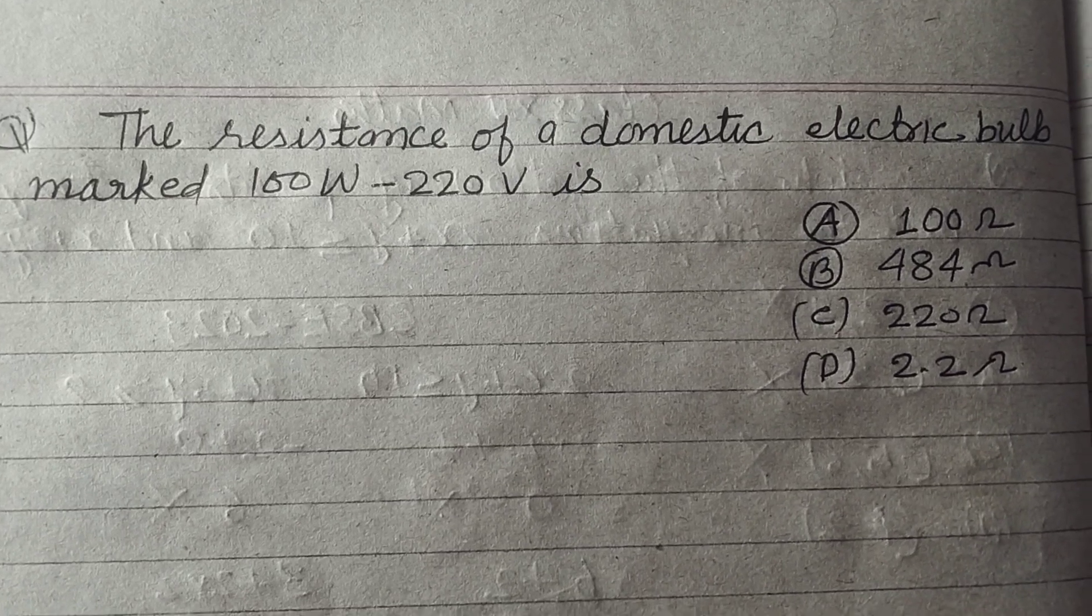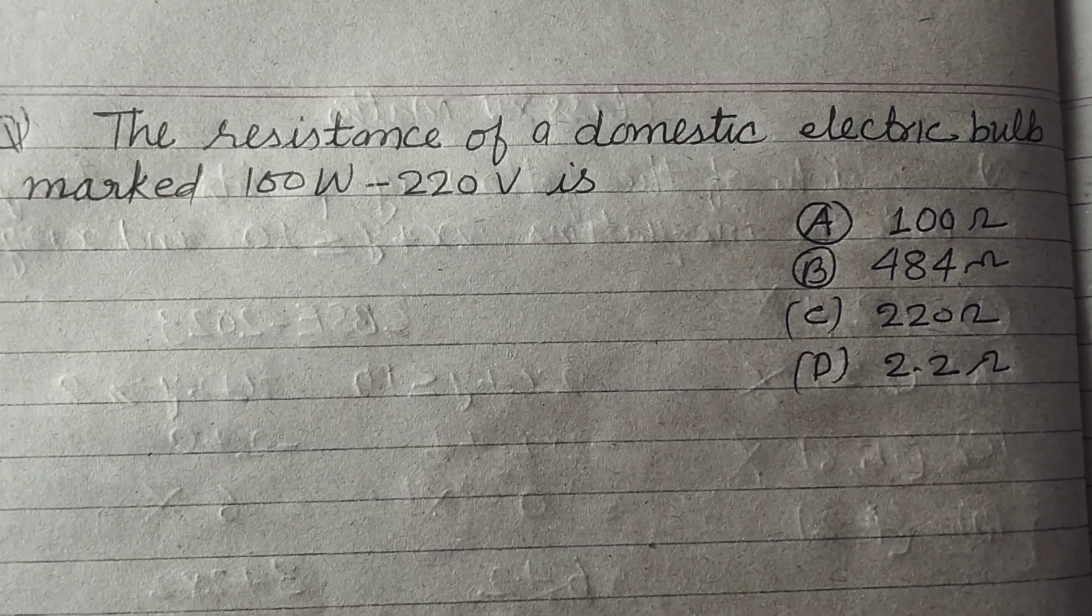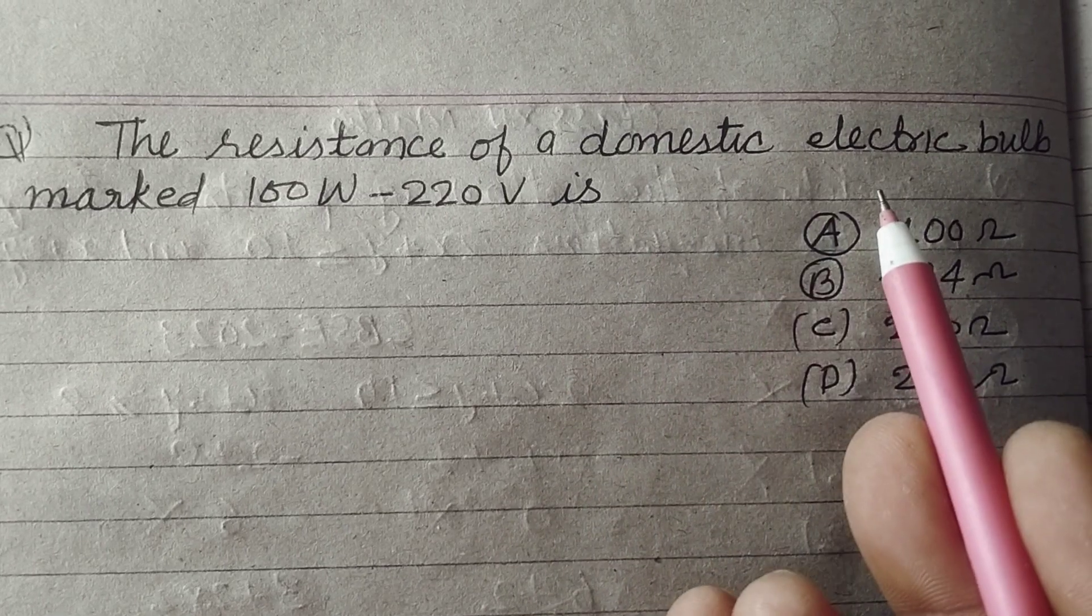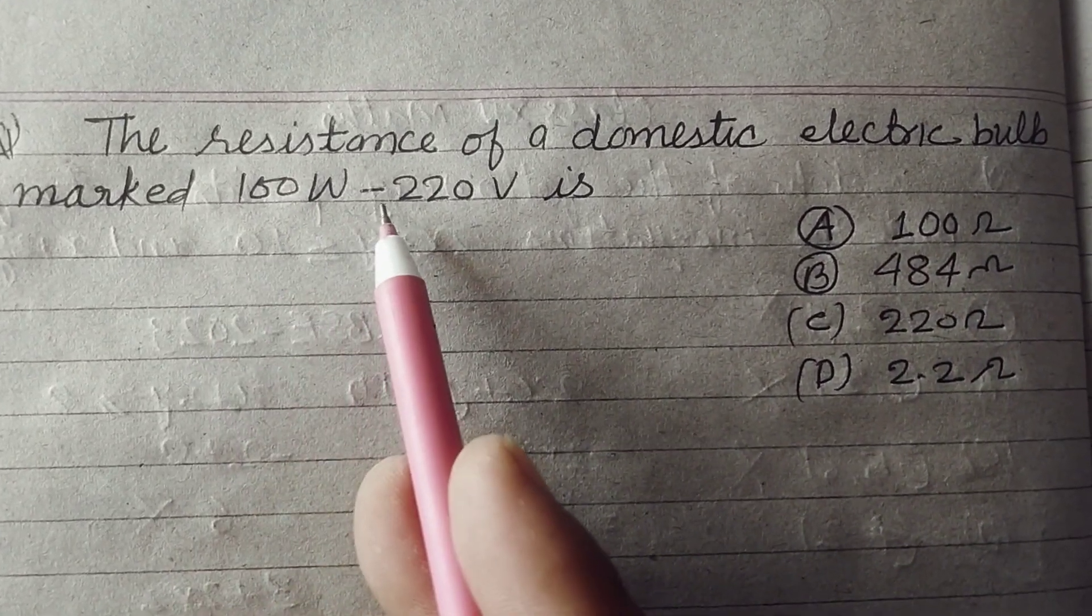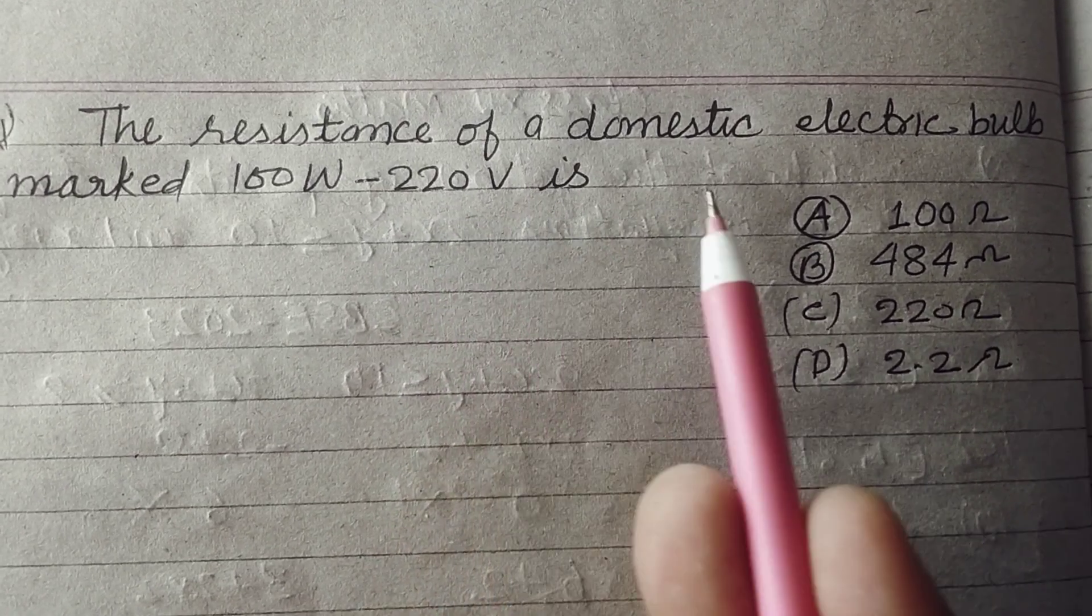Hello students, warm welcome to this YouTube channel. The resistance of a domestic electric bulb marked as 100W-220V is.